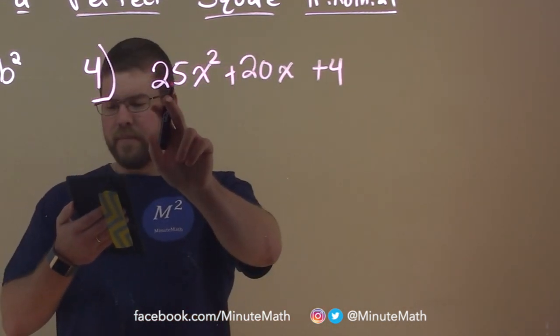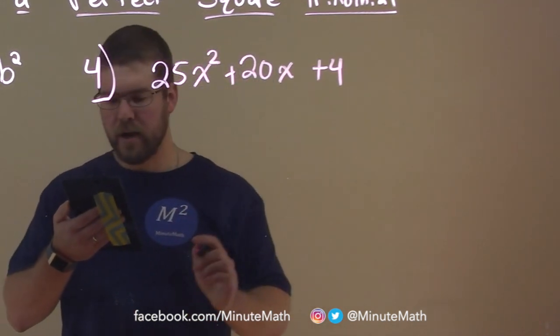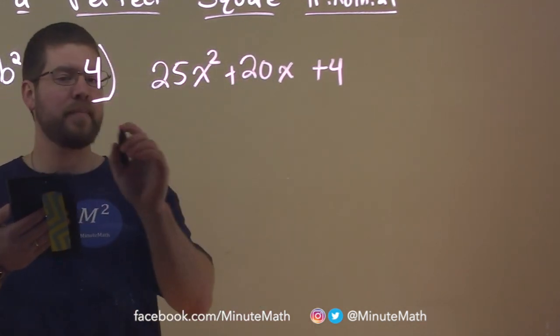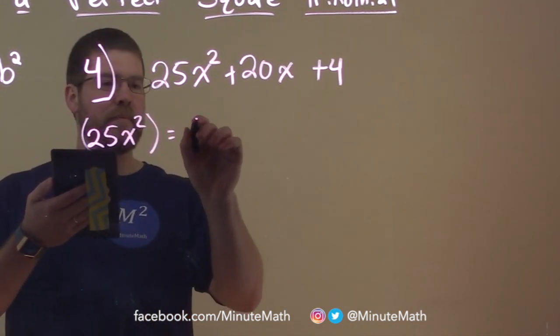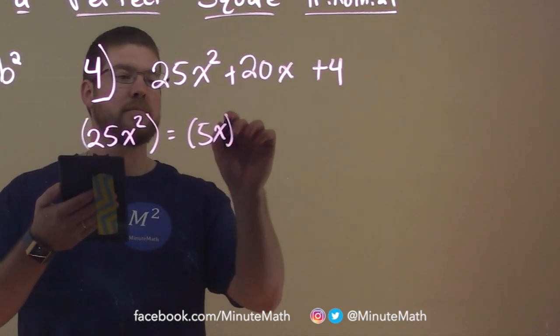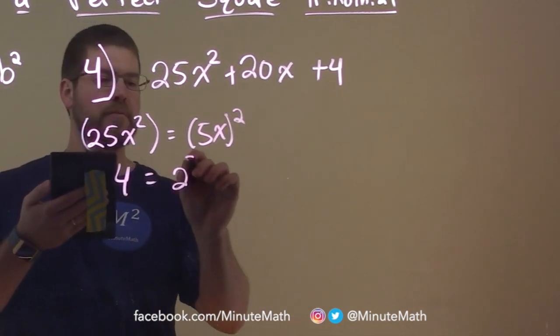We note that 25x squared and 4 are both perfect squares because we know that 25x squared is equal to 5x squared and 4 equals 2 squared.